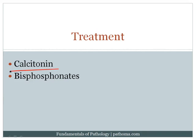Treatments for Paget's disease include calcitonin, which is the anti-PTH and inhibits osteoclasts from resorbing bone — targeting the osteoclastic first phase of the disease. Bisphosphonates cause apoptosis of osteoclasts, also inhibiting the osteoclast activity in this disorder.